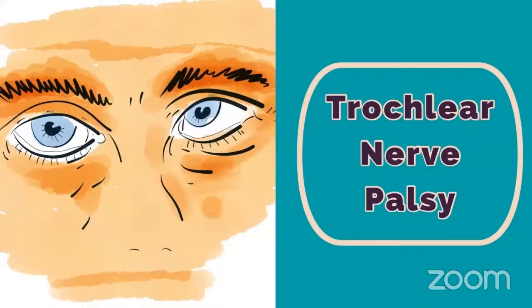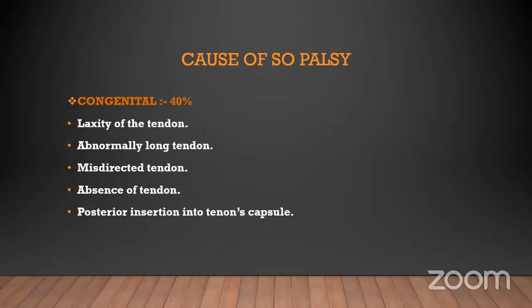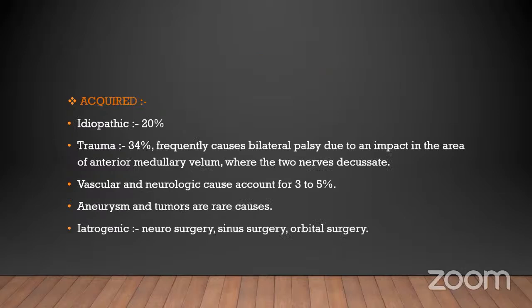Causes of fourth cranial nerve palsy: congenital causes account for 40%, including laxity of the tendon, abnormal long tendon, misdirected tendon, absence of the tendon, and posterior insertion into Tenon's capsule. Acquired causes: idiopathic 20%, trauma 34% — frequently causing bilateral palsy due to impact at the anterior medullary velum where the two nerves cross. Vascular and neurological causes account for 3–5%; aneurysm and tumor are rare. Iatrogenic causes include neurosurgery, sinus surgery, and orbital surgery.